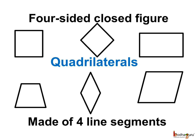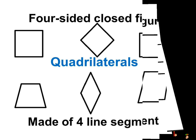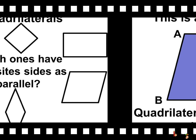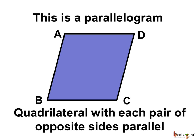Now let's see the different types of quadrilaterals. Which of these have their opposite sides as parallel? A quadrilateral with each pair of opposite sides parallel is special.